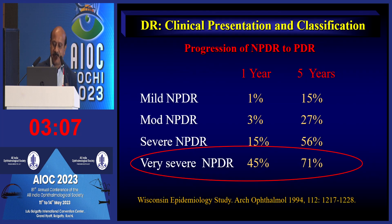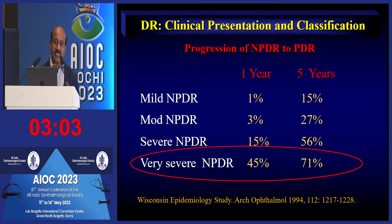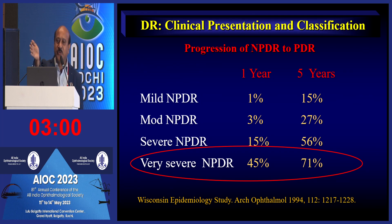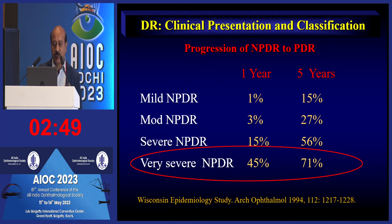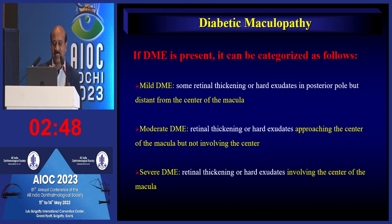Staging NPDR matters clinically: in one year, half of patients with very severe NPDR will progress to proliferative diabetic retinopathy. If you miss these patients at this stage, they can bleed and suffer severe complications. You must pick up patients at this stage and intervene.